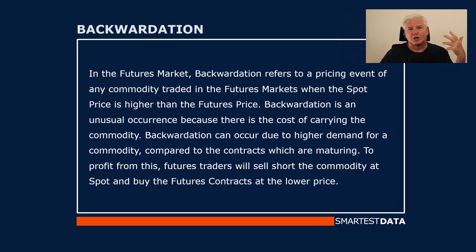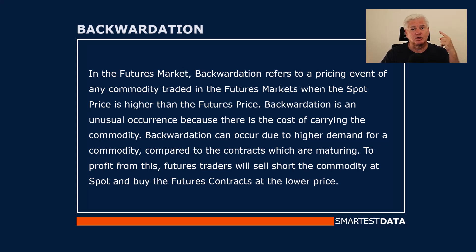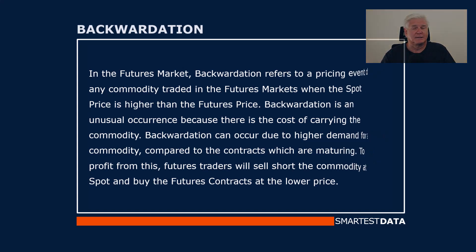Backwardation is an unusual occurrence because there is the cost of carrying the commodity. It can occur due to high demand for a commodity compared to the contracts which are maturing. To profit from this, futures traders will sell short the commodity at spot and buy the futures contract at the lower price.